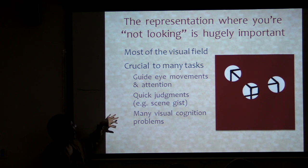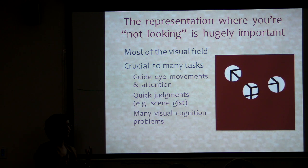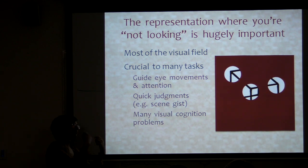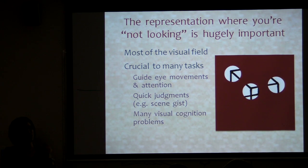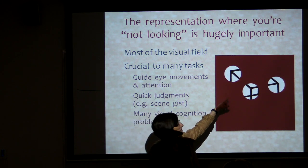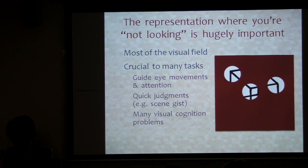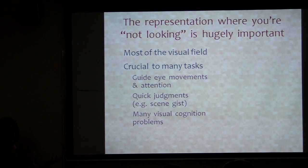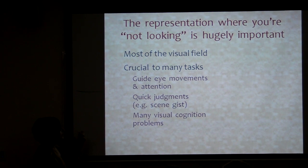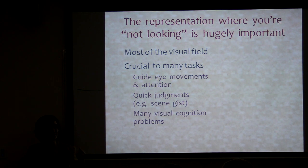It's also probably very important for a lot of visual cognition problems. Even though we often have this toy story that you look in one place and piece together information from that location with information from another location, in reality we're not very good at this piecing together. If all you had was your fovea and you'd just done three fixations, you don't get nearly as much information about what's there as if I really quickly show you the whole thing. So this representation where you're not looking is hugely important to understanding vision.